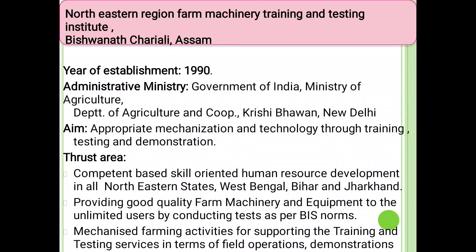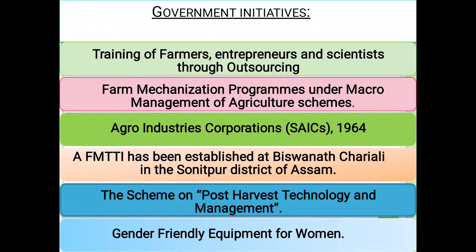Appropriate mechanized farming activity for supporting training and testing services in terms of field operations demonstrations. Government initiative for that purpose: testing of farmers, entrepreneurs and scientists through outsourcing. Farm Mechanization Programs under Macro-Management of Agriculture Scheme, Agro Industry Corporation i.e. SAIC, established in 1964. A Farm Machinery Training and Testing Institute has been established at Biswanath Chariali in the Sonitpur District of Assam. The scheme on Post-Harvest Technology and Management, and gender-friendly equipment for women are also covered.